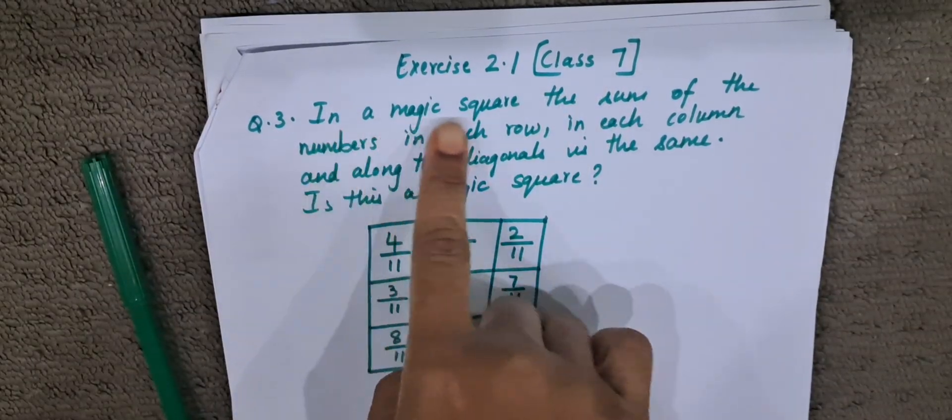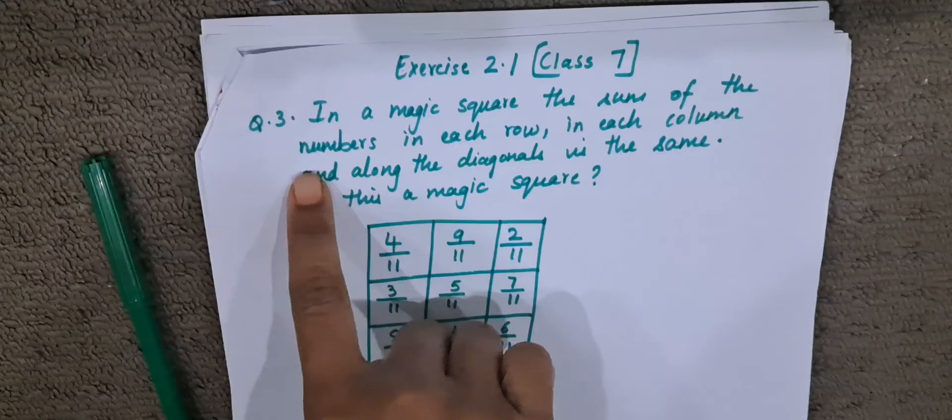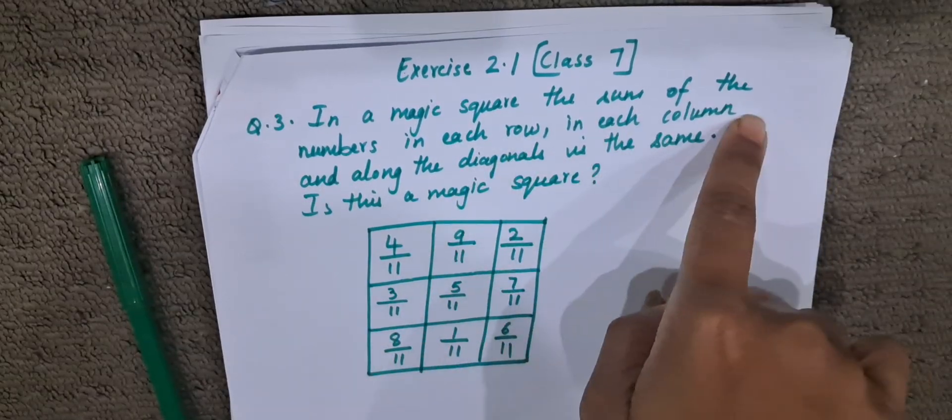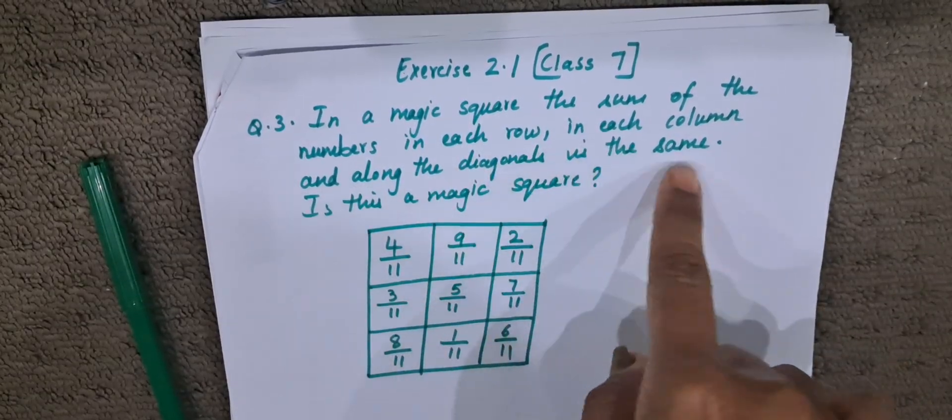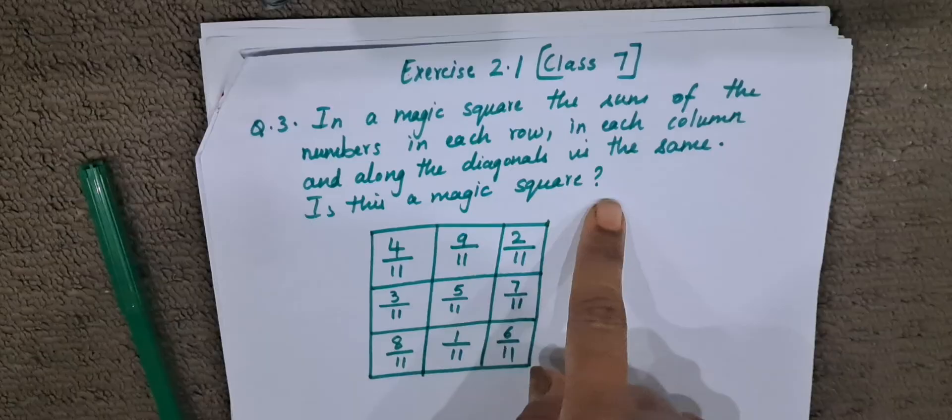The question is: in a magic square, the sum of the numbers in each row, in each column, and along the diagonals is the same. Is this a magic square?